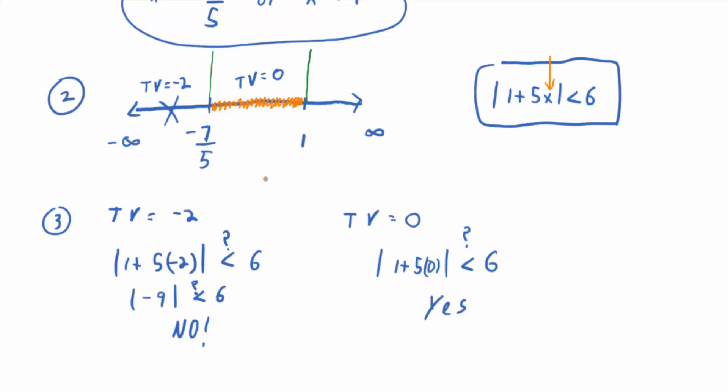Now what's your suspicion on the interval from 1 to infinity? It's not going to work. Bear with me, show why it doesn't work. What would be a good test value bigger than 1? 2. We don't get creative here. Plug in 2. Is the absolute value of 1 plus 5 times 2 less than 6? No. That's 11.